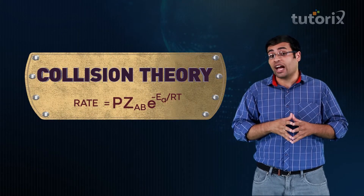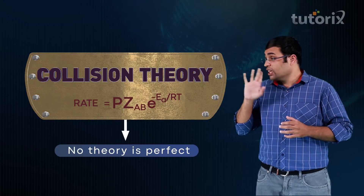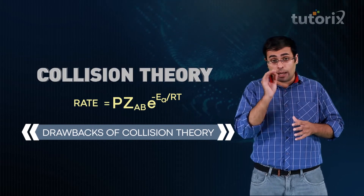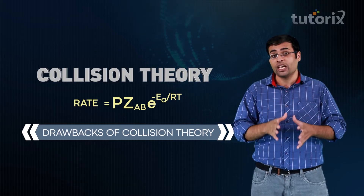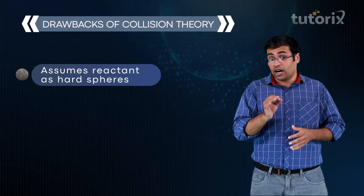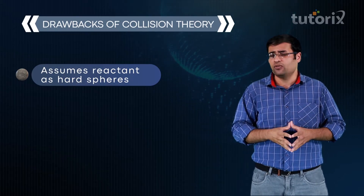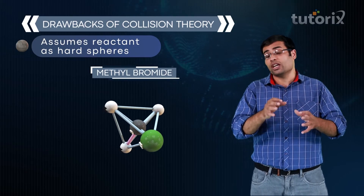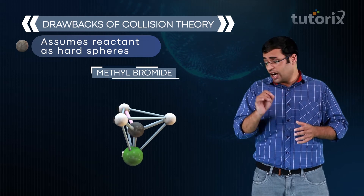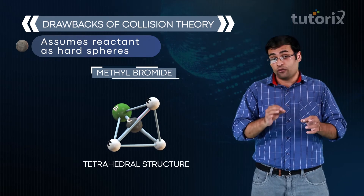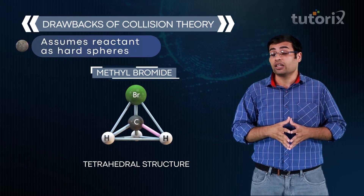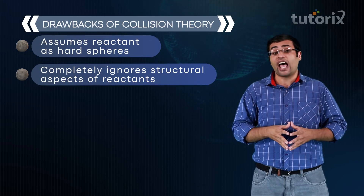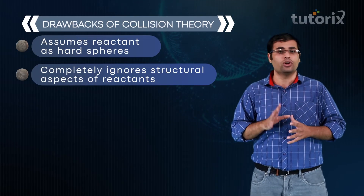Remember, in chemistry no theory is perfect, and collision theory has its own drawbacks. The biggest drawback comes from its first point: assuming reactants as hard spheres. In reality, reactants are not hard spheres. For example, methyl bromide — used in our SN2 reaction — has a tetrahedral structure and is not spherical. Therefore, collision theory completely ignores the structural aspects of reactants, which is its biggest drawback. Further details and more drawbacks will be studied in higher classes.